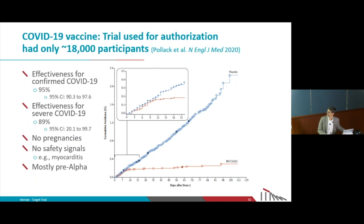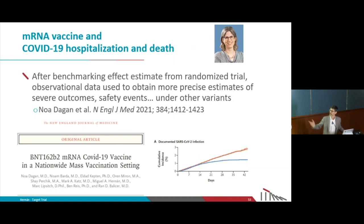We cannot find many possible side effects with 18,000 people. Also, this trial was done when SARS-CoV-2 was the original Wuhan virus — even if we know it works for that variant, we don't know if it will work for Alpha, Delta, or Omicron. That is where observational studies come in: we can do benchmarking of the trial results and then extend to estimate effects on hospitalization, death, different subgroups, safety, and more.